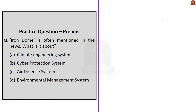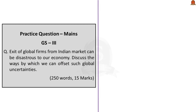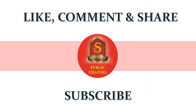Final question: Iron Dome is often mentioned in the news — what is it? Options are: climate engineering system, cyber protection system, air defense system, or environmental management system. Based on our discussion, option C — air defense system — is the correct answer. This concludes today's Hindu news analysis. If you like the video, please like, comment, share, and subscribe to Shankar IAS Academy's YouTube channel for more updates on UPSC Civil Services preparation.